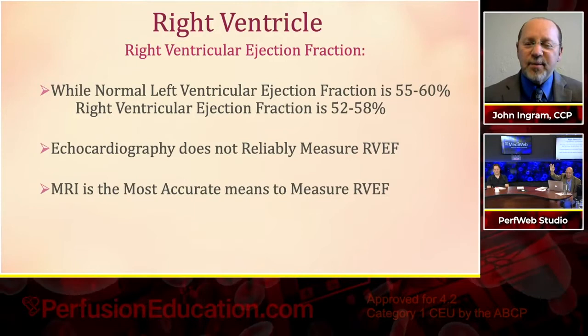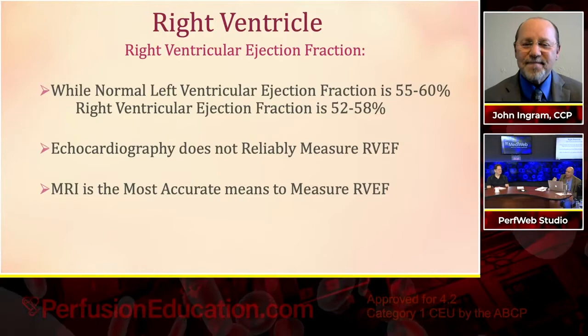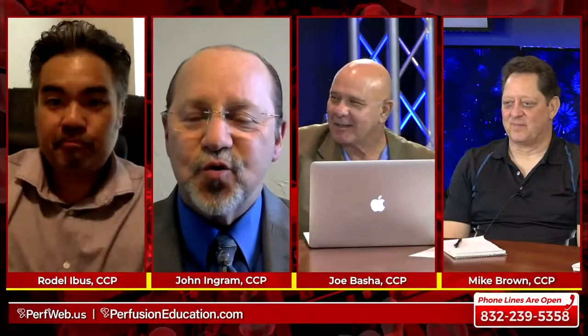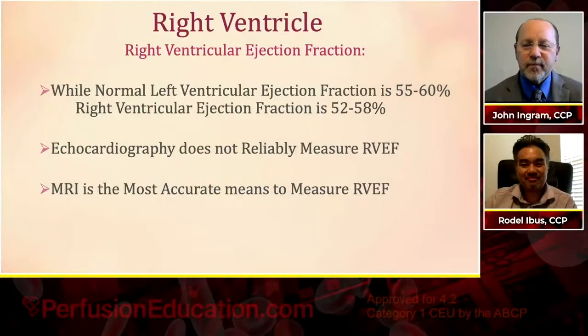Now let's talk about the right ventricle. An audience member raises the Thebesian veins — also true, as those also create an effective right-to-left shunt affecting the heart. Here's something we hardly ever hear: everybody talks about ejection fraction meaning left ventricular ejection fraction. Why does nobody ever talk about the right ventricular ejection fraction? Do we just assume it's the same as the left? As it turns out, it's actually about 5% lower.